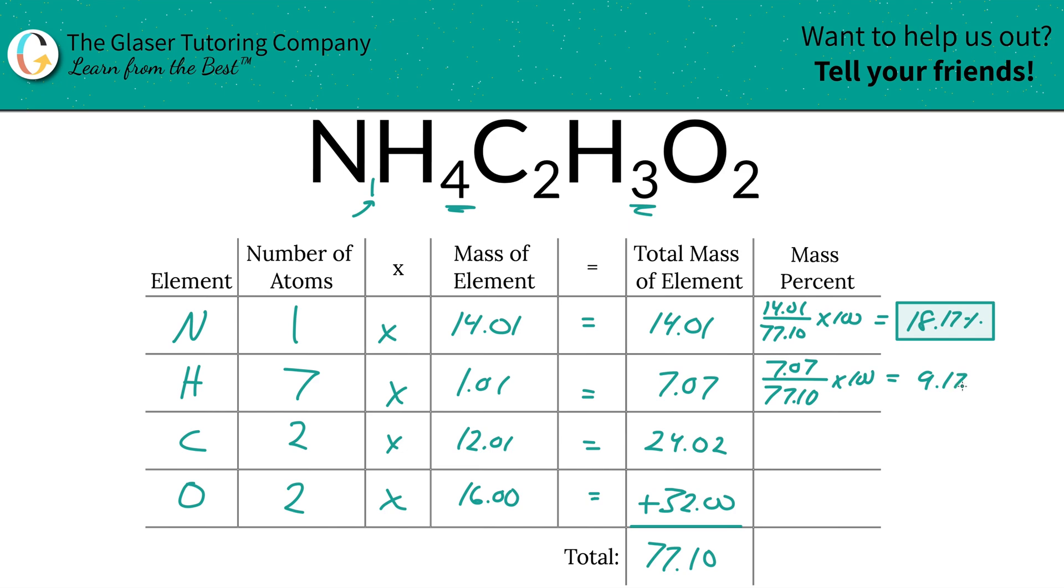And then we are going to do carbon. We're going to take the total mass of the carbon divided by the total mass of the entire compound, multiply that bad boy by 100, and that's going to be 31.15 percent.